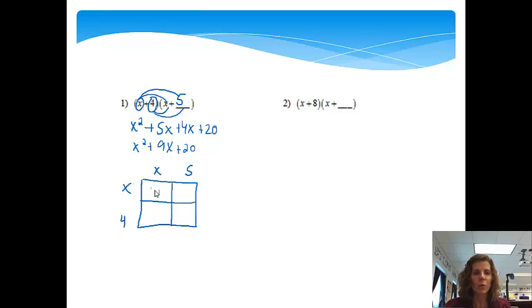Now to get this box, we're going to do x times x, which would be x². This box will be x times 5, which is 5x. This box will be 4 times x, which is 4x. And this last box would be 4 times 5, which is 20. Now from here, again, we'll just combine like terms. I'll have x². 5x and 4x together would give me 9x. And then plus 20. Notice I get the same answer either way. This just gives me a more organized way of working the problem.